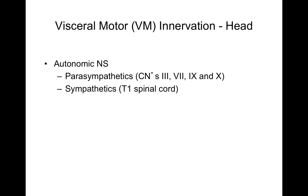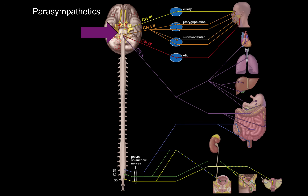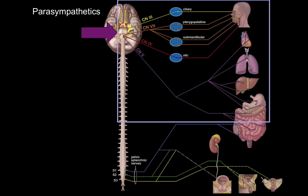Let's talk about these individually, starting with parasympathetics. Remember that parasympathetics is the branch of the autonomic nervous system known as the cranial-sacral division — cranial because the parasympathetics originate from the brainstem cranial region, and sacral because they also come from the S2, 3, and 4 levels of the spinal cord. Now let's look at cranial nerves 3, 7, 9, and 10.